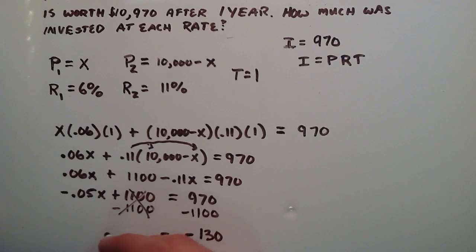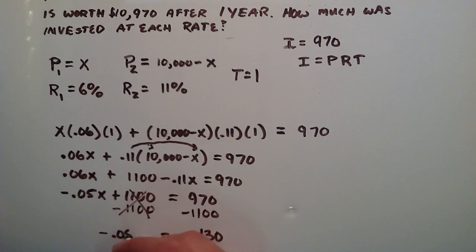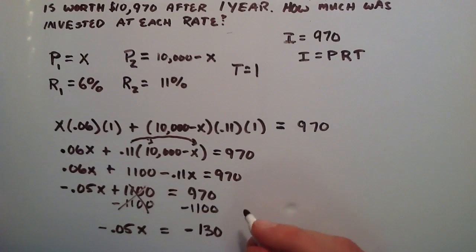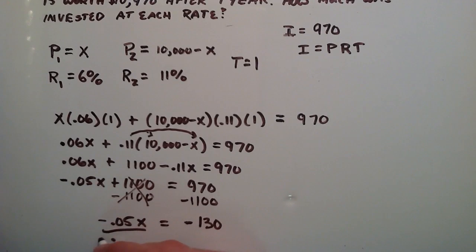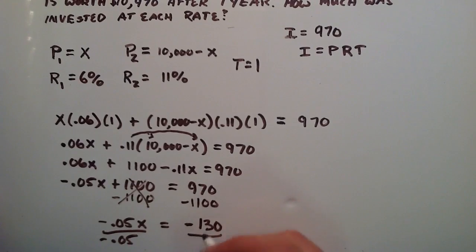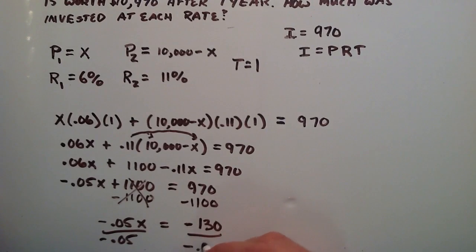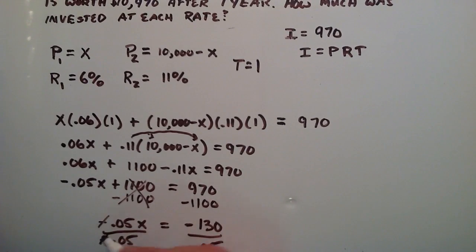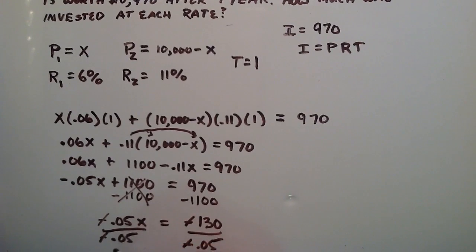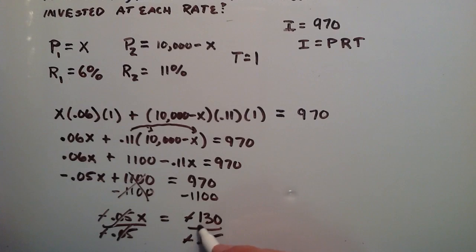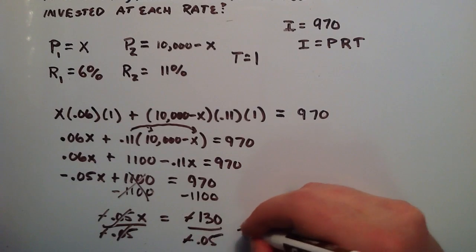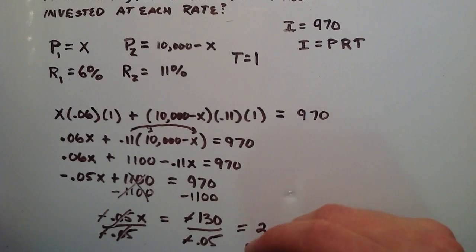So negative 130 is equal to negative .05X. And so now if we just simply divide each side by negative .05, then we have negative .05 divided by negative .05 and negative 130 divided by negative .05. The negatives cancel in each case and the .05 over .05 cancels, leaving us with X on the left hand side. So we just have 130 divided by .05 and that equals 2,600.